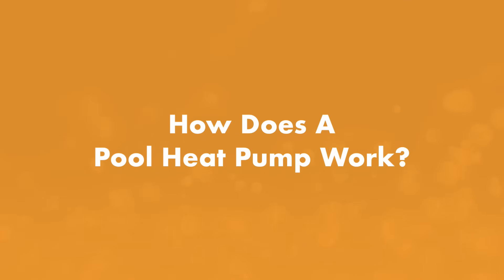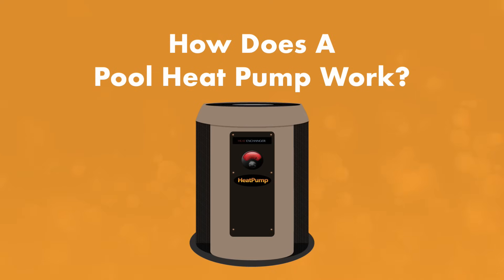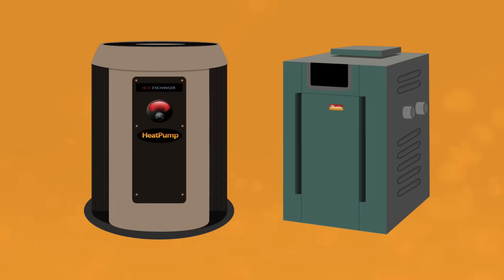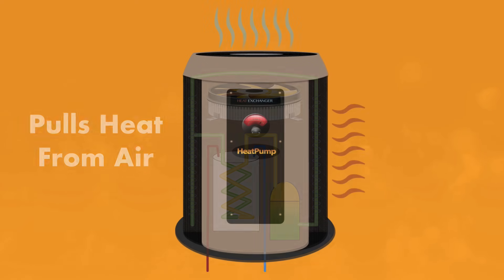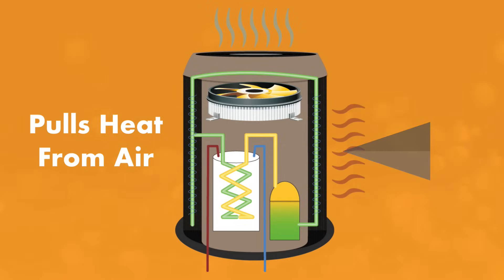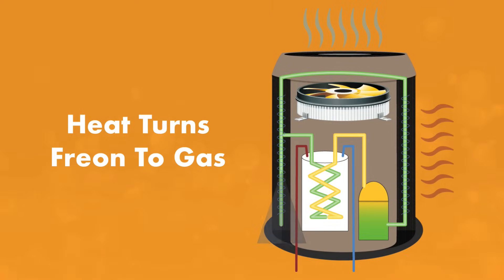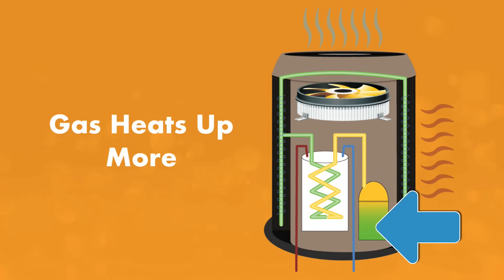First, how does a pool heat pump work? The pump uses electricity and ambient air to heat up your pool water. And unlike a gas heater, pool heat pumps actually don't produce heat. They just transfer it. It's basically like an air conditioner but in reverse. The pool heat pump uses a fan to pull in heat from the outside air. And then the heat is sent to the pump's evaporator coil, where liquid freon absorbs the heat and becomes gas. That warm gas passes through the pump's compressor, where it gets even hotter.